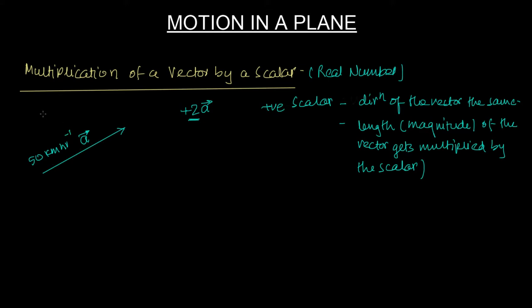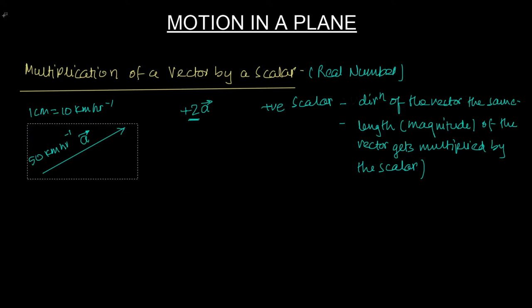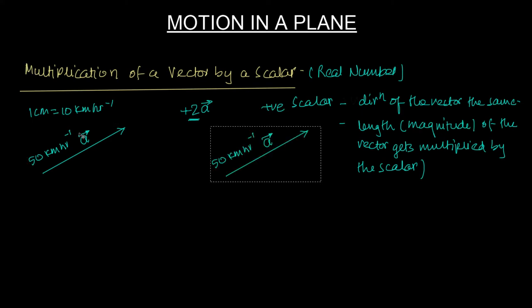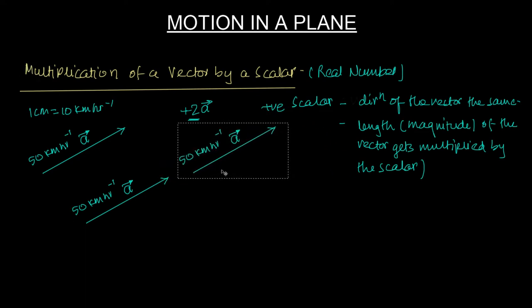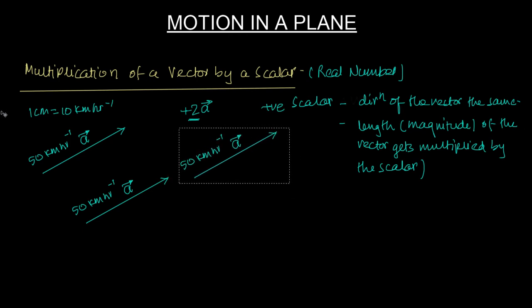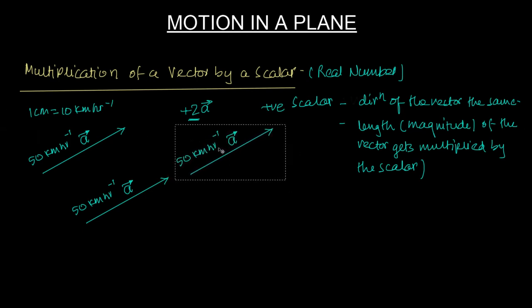Let's say this vector represents wind blowing at 50 km per hour. Maybe this is 5 cm in length, and you have defined the scale to be 1 cm = 10 km per hour. So if I have to represent 2a, the vector length will become twice.